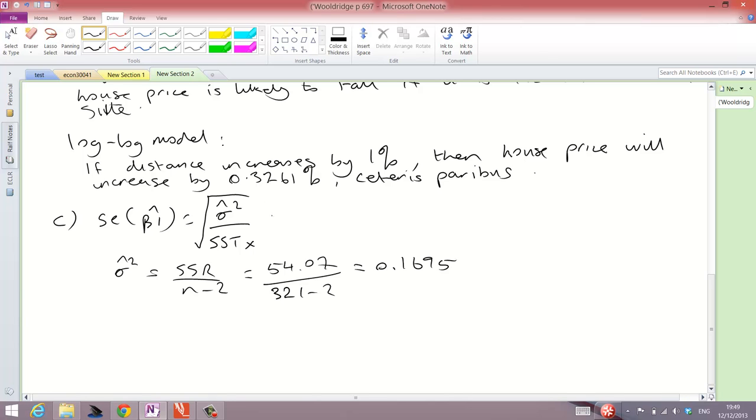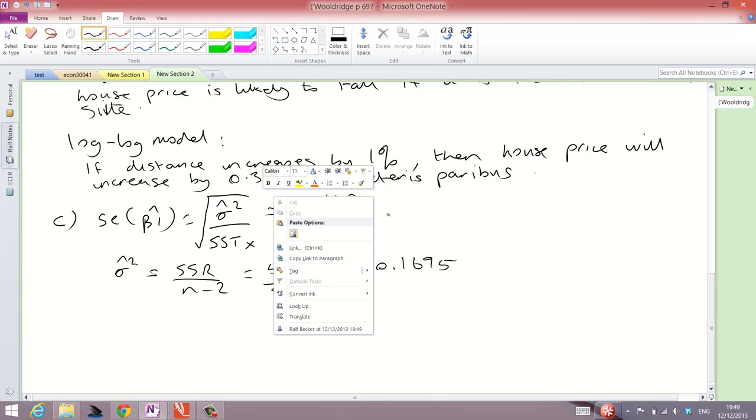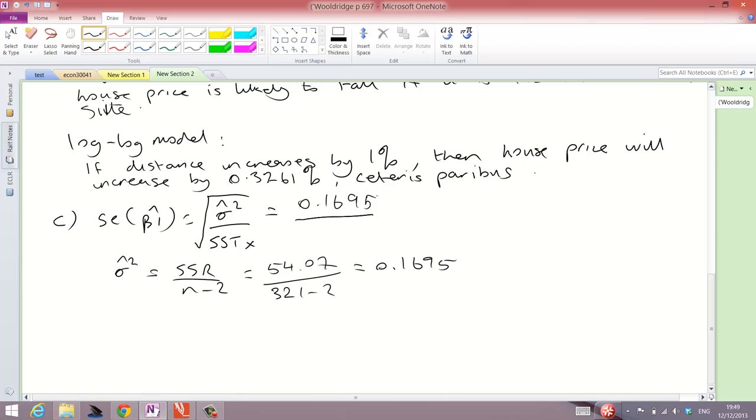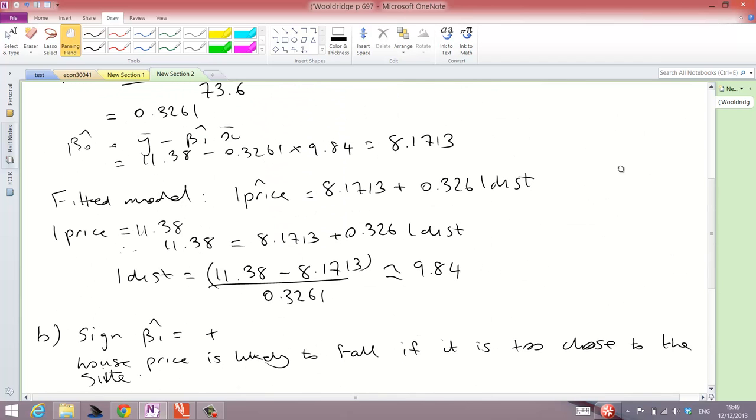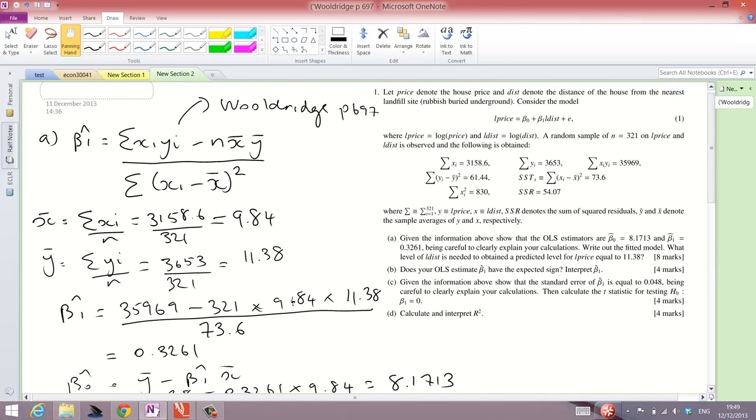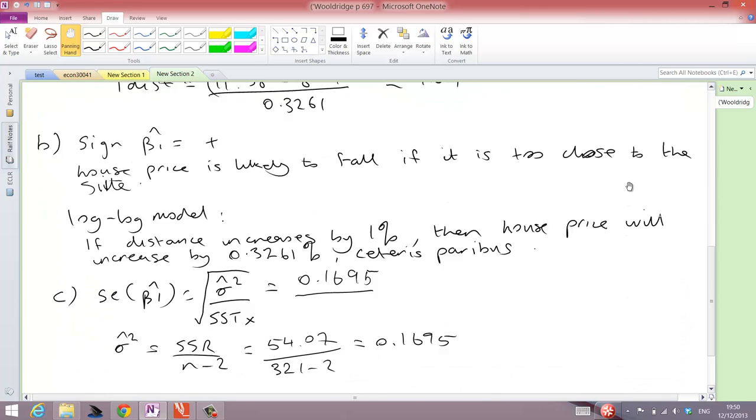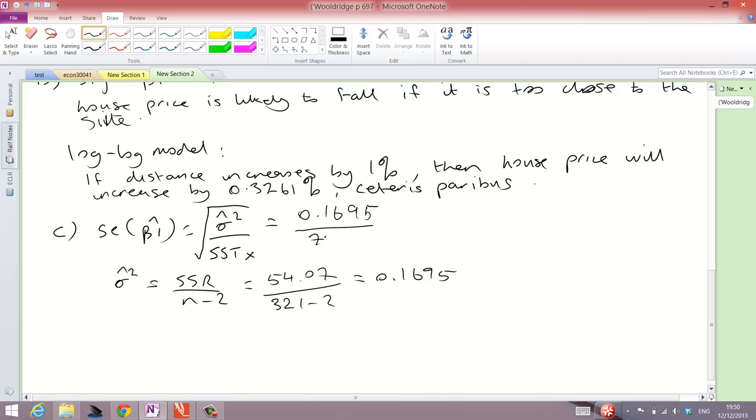Now, we have this term. We can put this into the formula for the standard error of beta 1 hat. So, that is 0.1695 divided by the total sum of squares x, which is given in the question to be 73.6. So, the answer is indeed 0.048.